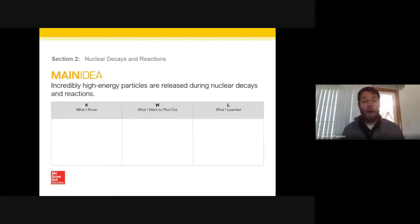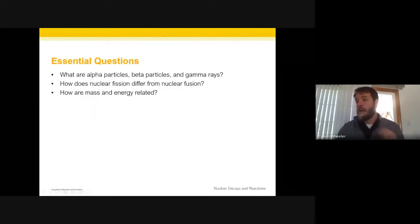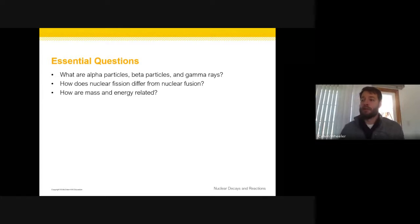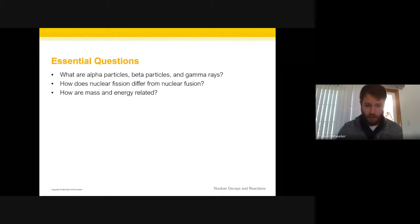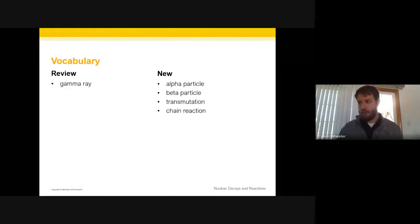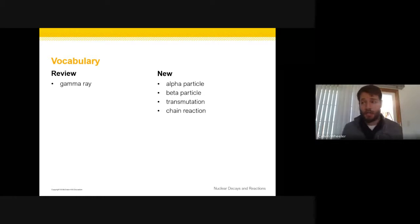Now we want to look at what happens when these nuclei are unstable. We want to talk about alpha particles, beta particles, and gamma rays, and explore nuclear fission and nuclear fusion. Fission is splitting apart; fusion is coming together. Some new terms: alpha particle, beta particle, transmutation, and chain reaction.